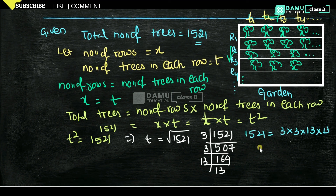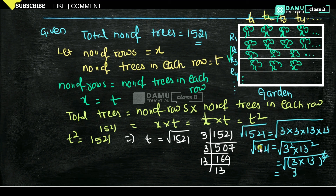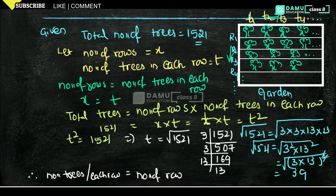So 1521 can be written as 3 × 3 × 13 × 13, that is 3 squared into 13 squared. So square root of 1521 equals square root of 3 squared into 13 squared, which equals 3 into 13, that is 39. Therefore number of trees in each row and number of rows are both equal to 39.